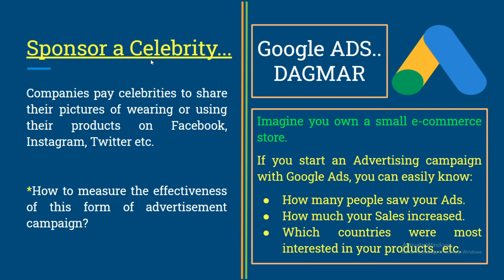One example is sponsoring a celebrity, which can be an effective and traceable way of advertising. Companies pay celebrities to share pictures while wearing or using their products on Instagram, Facebook, Twitter, etc. You can measure effectiveness by observing how many likes and shares these pictures get, what comments appear, and most importantly, how much sales increased for those particular products. If designed correctly, this strategy allows you to set defined and measurable goals.